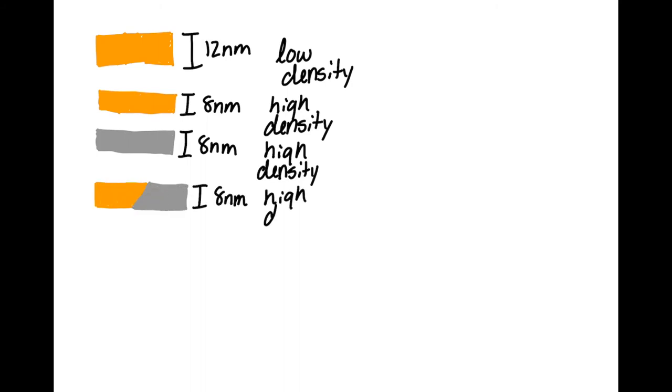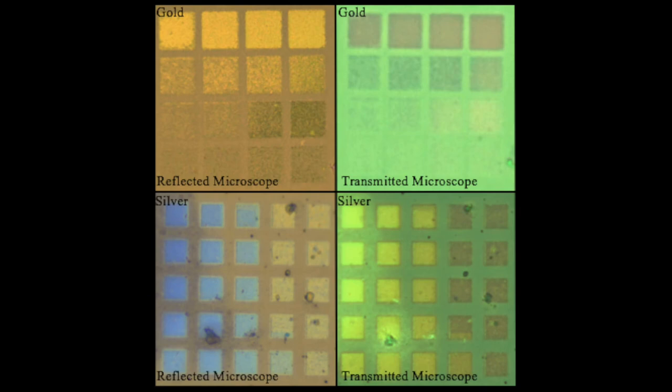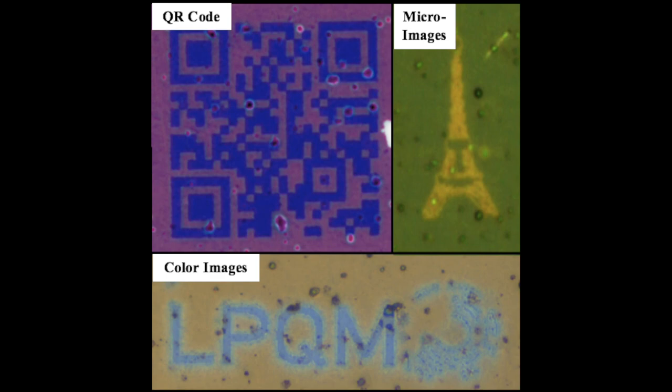I found that tunable colors were achievable with gold and silver, but not so much with mixtures of gold and silver. However, the use of mixtures of gold and silver in real-world applications is a possibility after more testing and further understanding of their optical properties.